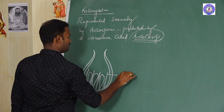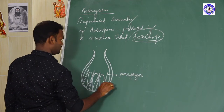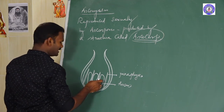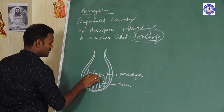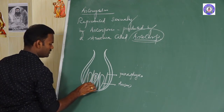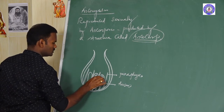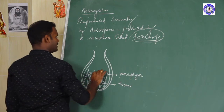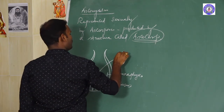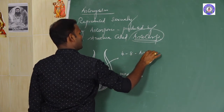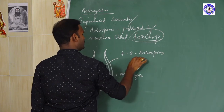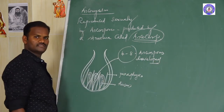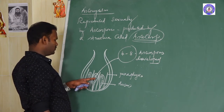These sterile structures are called paraphyses. The sac-like structures are called ascus — singular ascus, plural asci. Inside the ascus, 4 to 8 ascospores are developed after meiosis. They number 4 to 8, and this development of ascospores takes place inside the ascus.